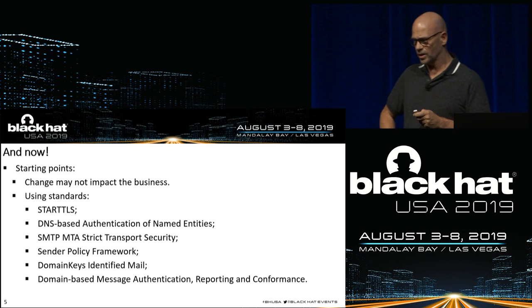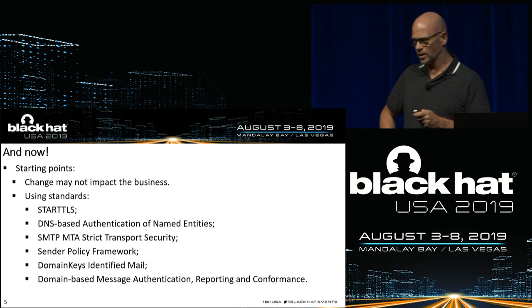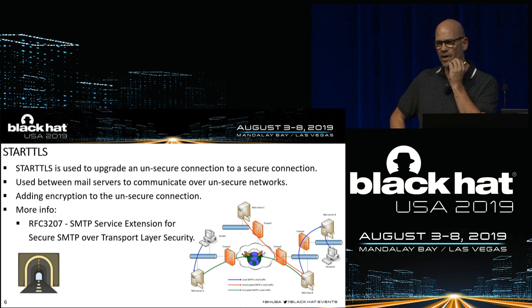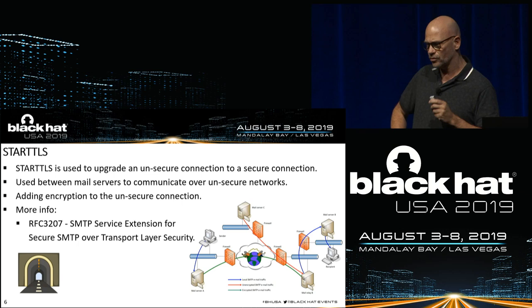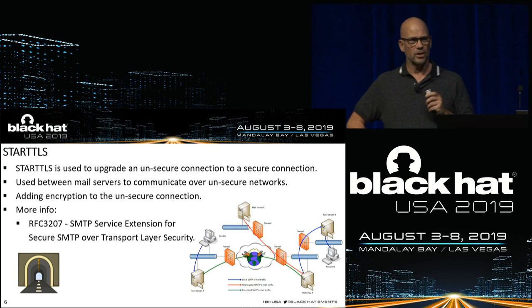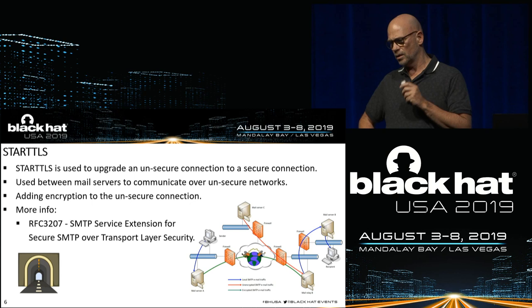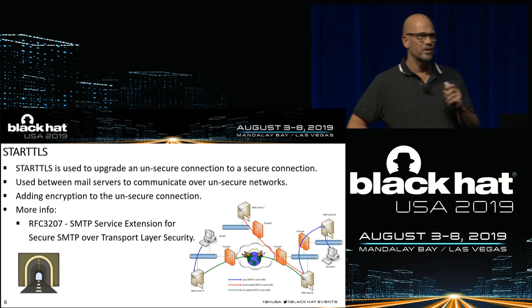Let's start with our first standard: StartTLS. StartTLS is a method of upgrading a plain text communication channel to a secure encrypted channel. With StartTLS, it is possible to create an encrypted SMTP connection between mail servers. However, StartTLS is vulnerable to man-in-the-middle attacks. These issues can be mitigated by using either DANE or MTA-STS, both of which we will present in this talk.